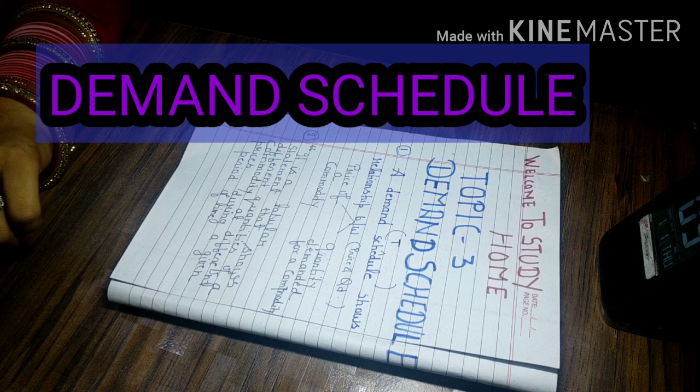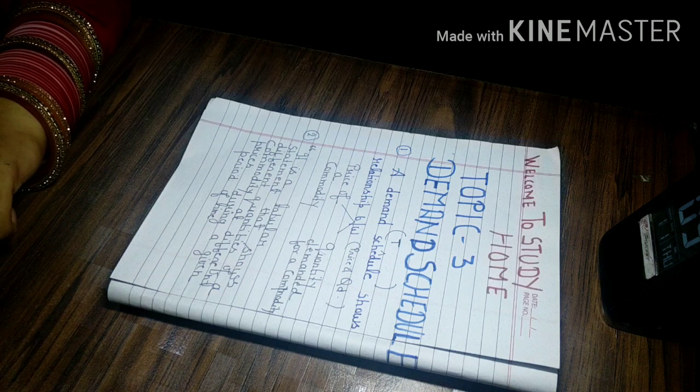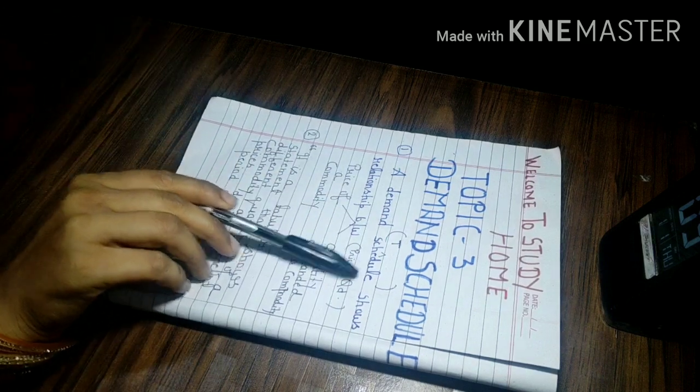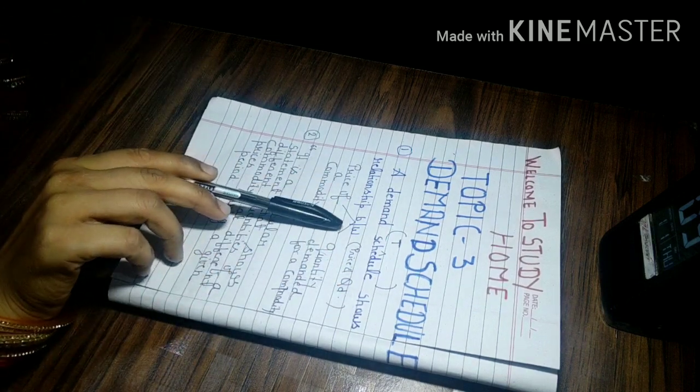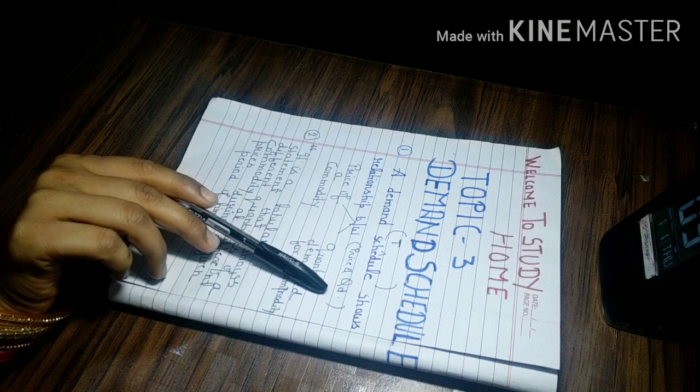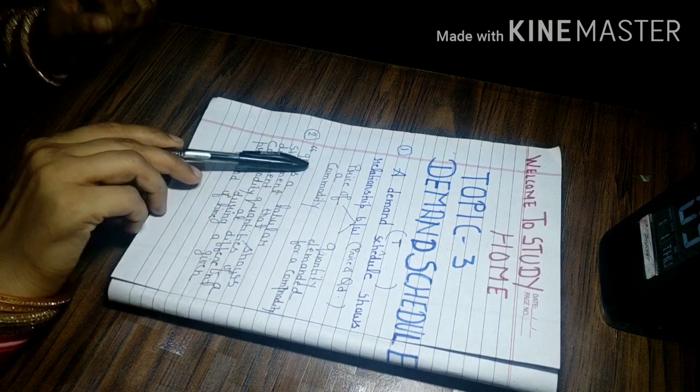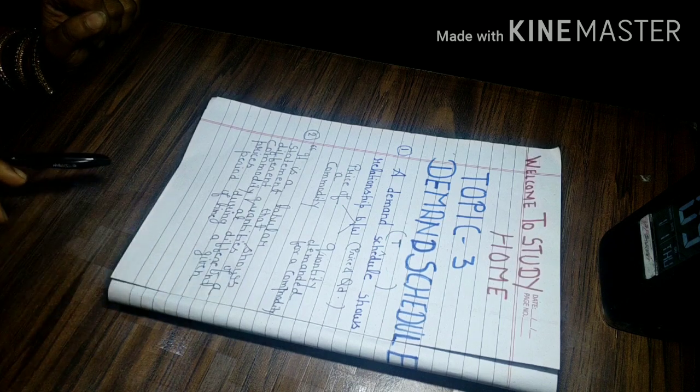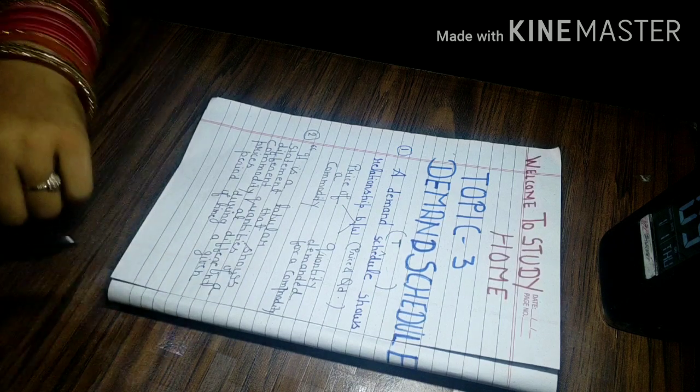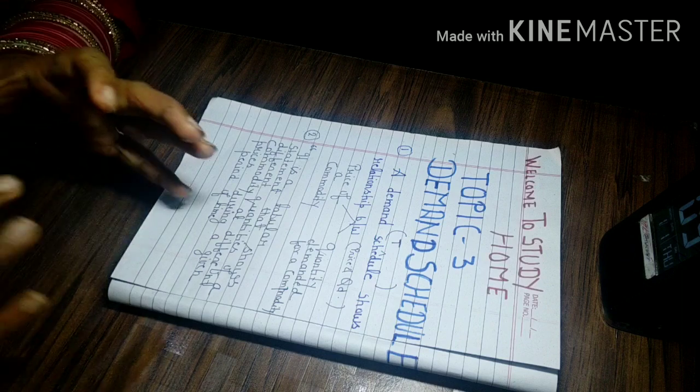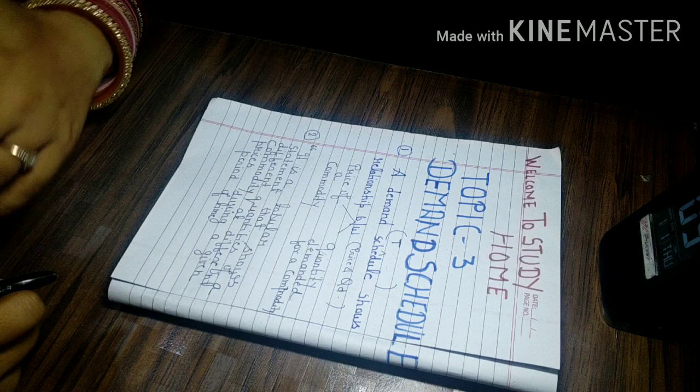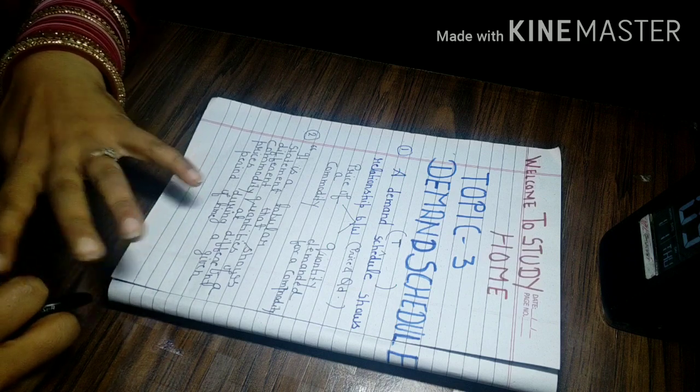Let us know about what is Demand Schedule. A Demand Schedule shows relationship between price of a commodity and quantity demanded for a commodity. Demand Schedule also shows the price of a commodity and its quantity demanded.